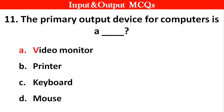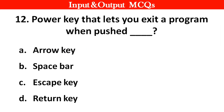Next question. The primary output device for computers is dash. Right answer is option A: Video monitor. Next question. The key that exits a program when pressed is dash. Options: A. Arrow key, B. Space bar, C. Escape key, D. Return key. Right answer is option C: Escape key.